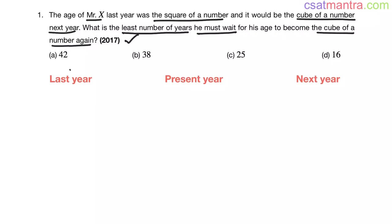We have three years: last year, present year and next year. It is said that in the next year, the age would be cube of a number. So let's see the cubes first.